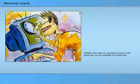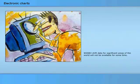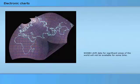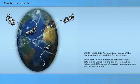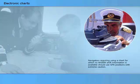WGS84 shift data for significant areas of the world will not be available for some time. Currently, geodetic survey data is available to compute the relationship between WGS84 and local datum for about 60% of Admiralty charts. The worst known difference between a local datum and WGS84 is of the order of 7 nautical miles, and differences of several hundred metres are not uncommon. Navigators using a chart for which no WGS84 shift information is available should use GPS positions with extreme caution. They should first establish the relationship between the chart datum by taking visual and/or radar fixes of sure features, which will provide a means of adjusting a GPS position to fit locally on the chart.